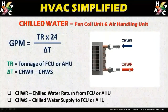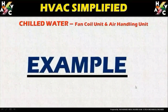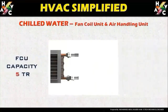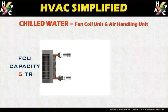Now let us analyze with an example to find out how we can derive a GPM for any fan coil unit. We are going to look into an example from which I will explain how we can derive the capacity of a 5-ton fan coil unit. Let us say the capacity of the fan coil unit is 5 TR.